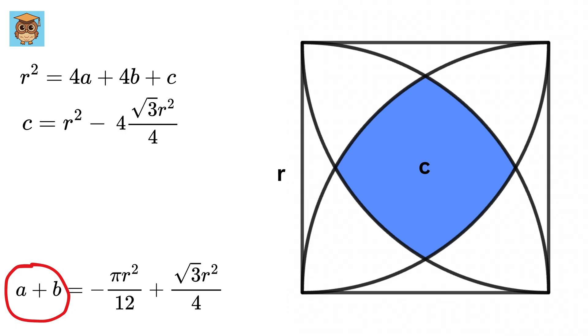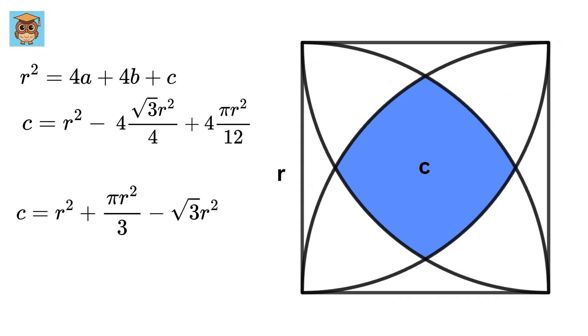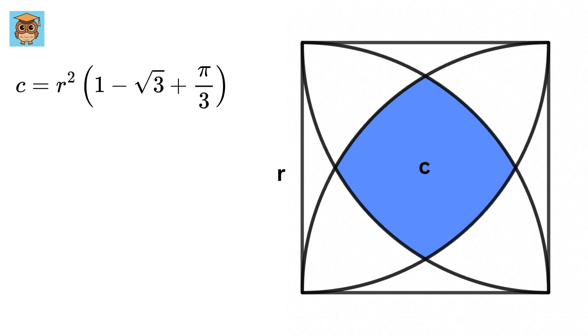Or r-square minus 4 times root 3 by 4 r-square plus 4 times pi r-square by 12, or r-square plus pi r-square by 3 minus root 3 r-square. Take r-square as common, and this will be 1 minus root 3 plus pi by 3, and that's it.